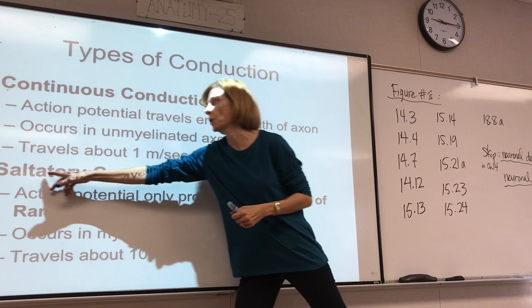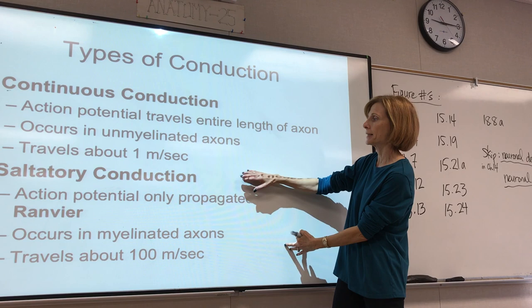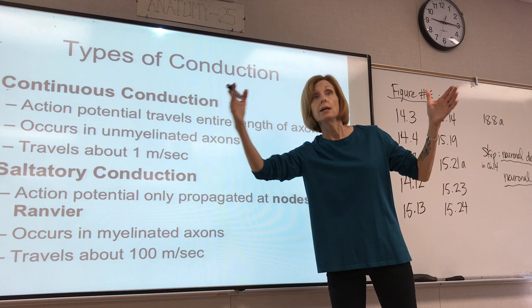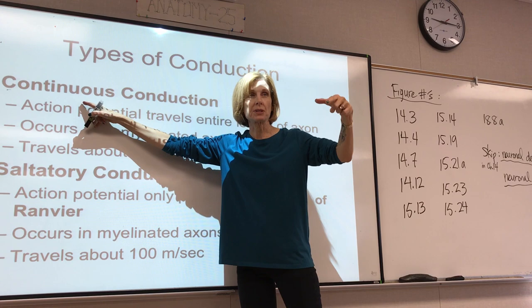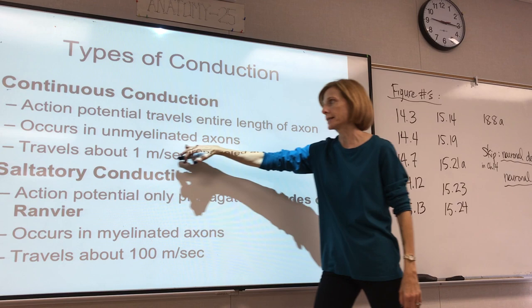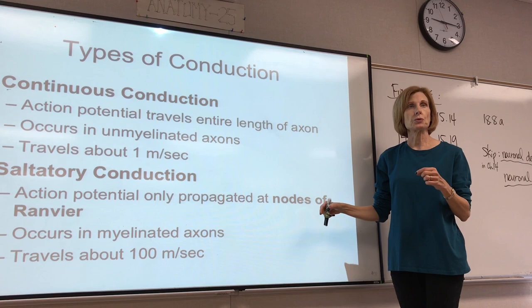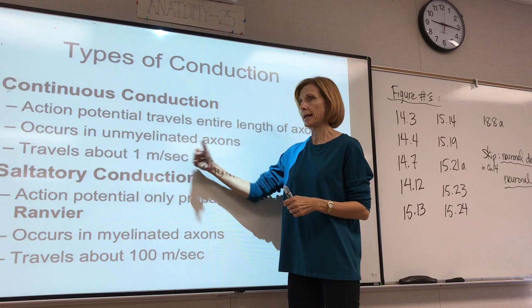Saltatory conduction is the fast one that happens in a myelinated axon. By contrast, in an unmyelinated axon, the action potential travels the entire length of the axon — this is called continuous conduction. You can think of it as not interrupted. This takes place in unmyelinated axons. For now, you need to know about these two different types of conduction and myelinated versus unmyelinated axons.